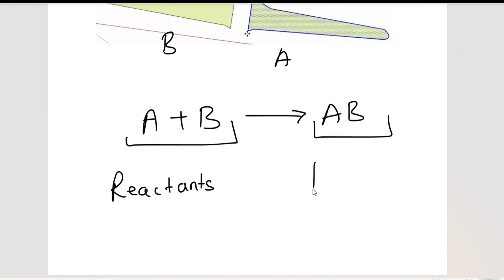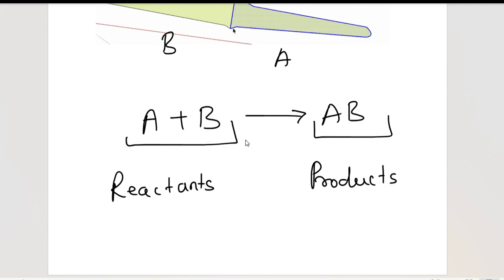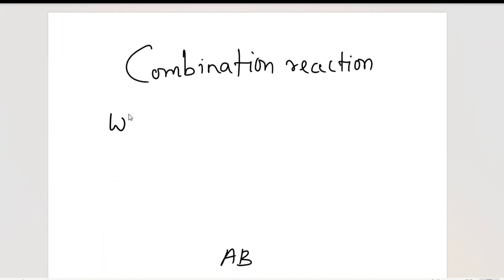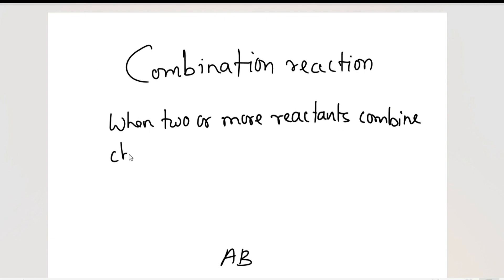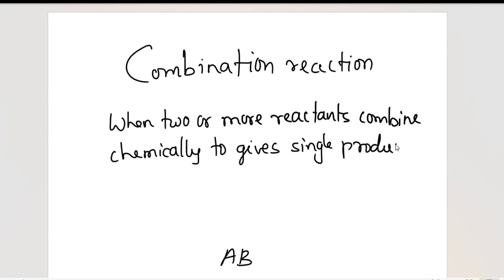In this equation, A and B are called reactants, and the right-hand side of the arrow is called the product. How many reactants? Two. How many products? Only one — though there can be more than two reactants. So a combination reaction is when two or more reactants combine chemically — very important, combine chemically, not just mix — to give a single product. If there is more than one product, it is not a combination reaction.